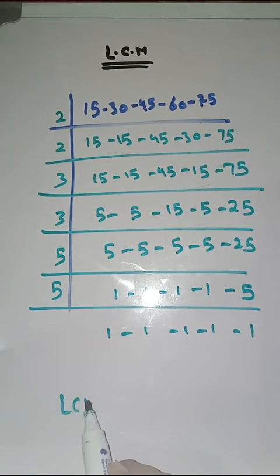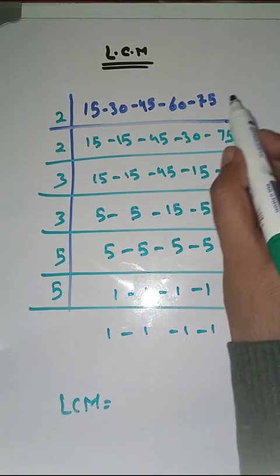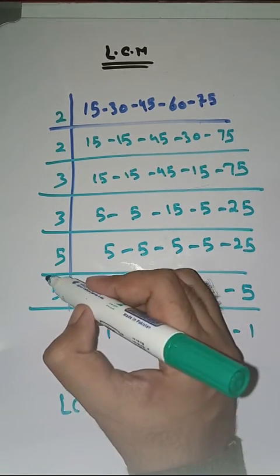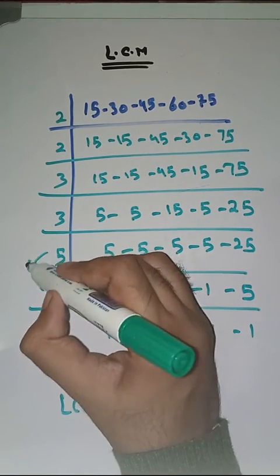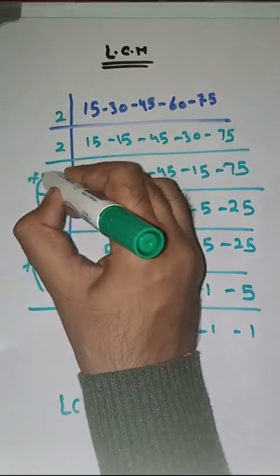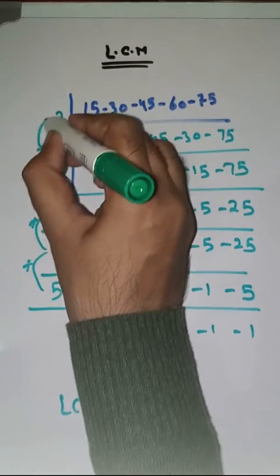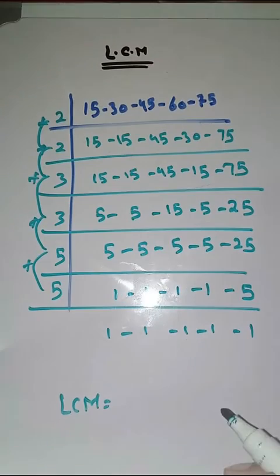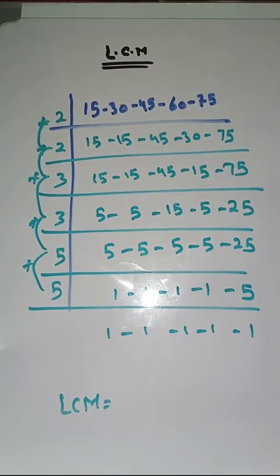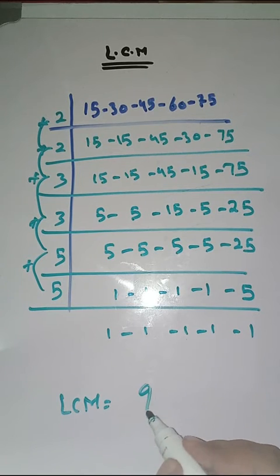So LCM of 15, 30, 45, 60 and 75 is equal to 5 into 5 into 3 into 3 into 2 into 2, which is equal to 900.